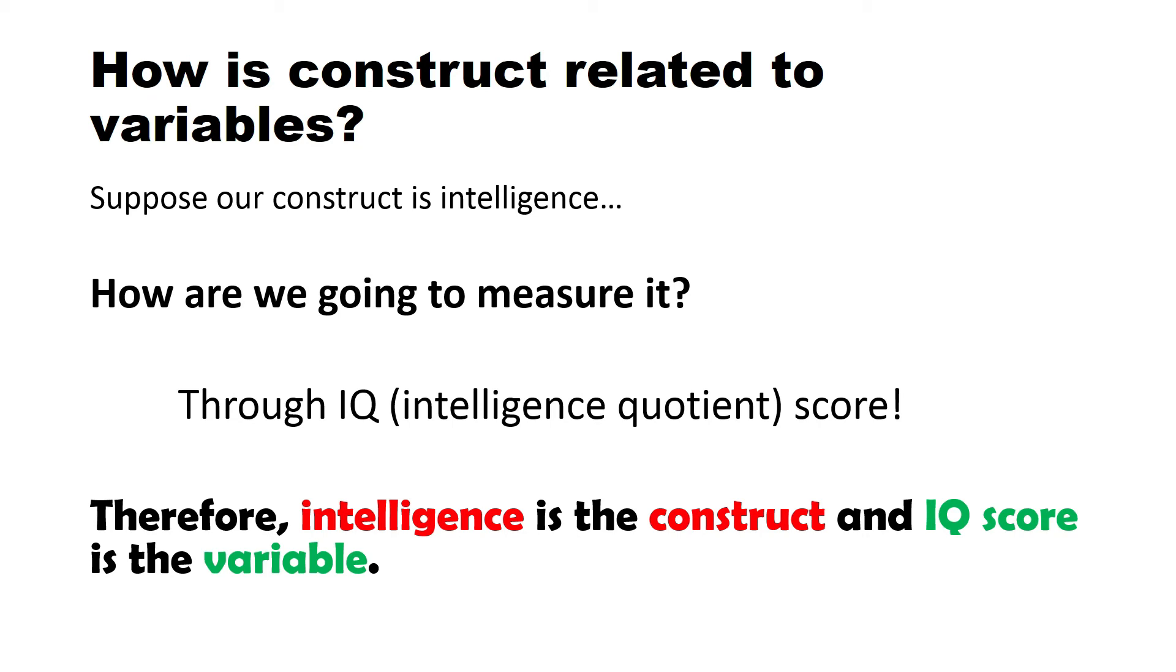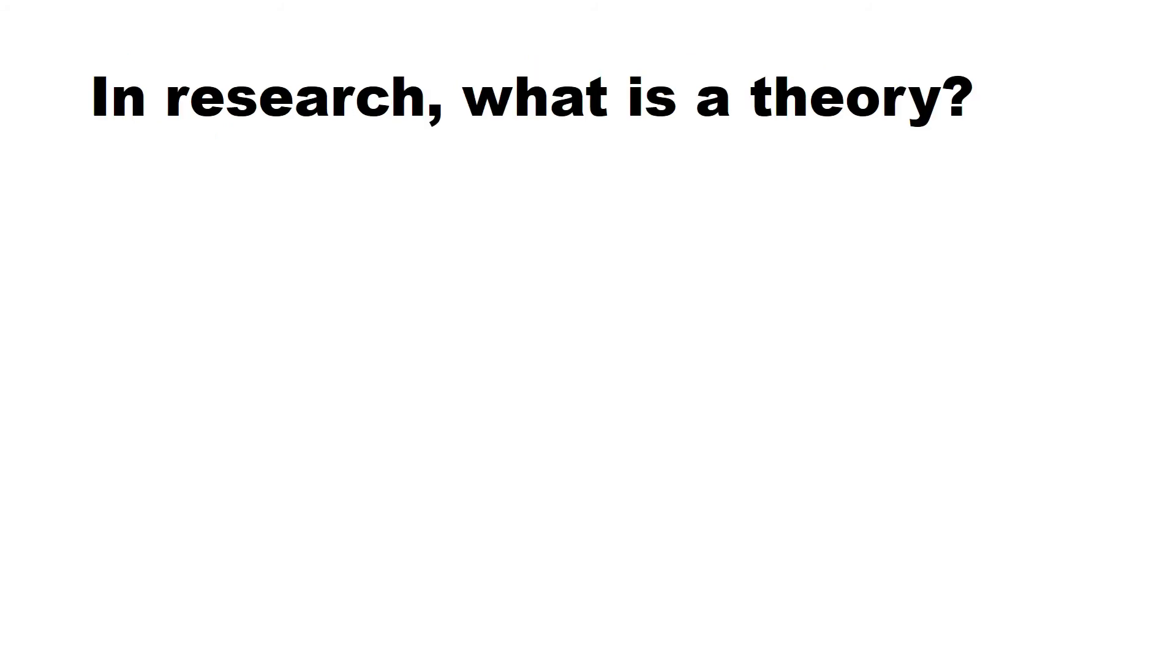Mas maganda kasi na example yung ibinibigay natin so that mas maintindihan nyo. For this particular example, related yung construct sa variable. Yung construct natin, intelligence, and what is our variable? That would be the IQ score. Wag po natin kalimutan that there is also another term that is also related to this topic which is theory. In research, what is a theory?